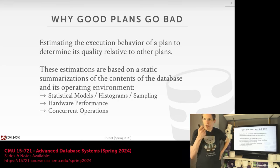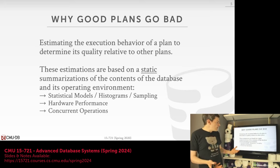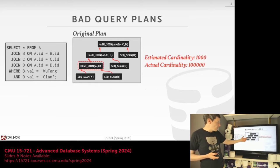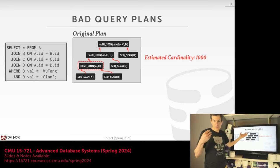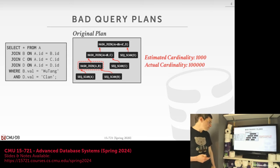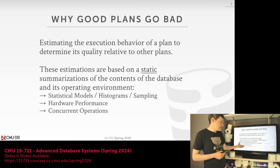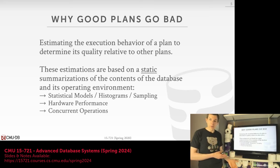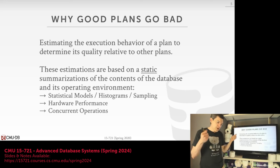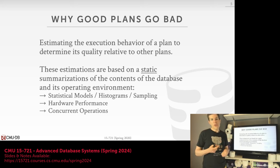The high-level idea is that we want to estimate the behavior of a plan to determine its quality relative to other plans — this is what the cost model does. Before executing, we derive cardinality from statistics maintained in our catalog about what our tables look like. These stats are based on histograms and possibly samples collected from the data. We can also make decisions about hardware, cache sizes, algorithms, and other concurrent queries. The main idea is that before we run the query, we only have an estimation of what the data looks like, and if we get that wrong, we want to be able to correct ourselves.